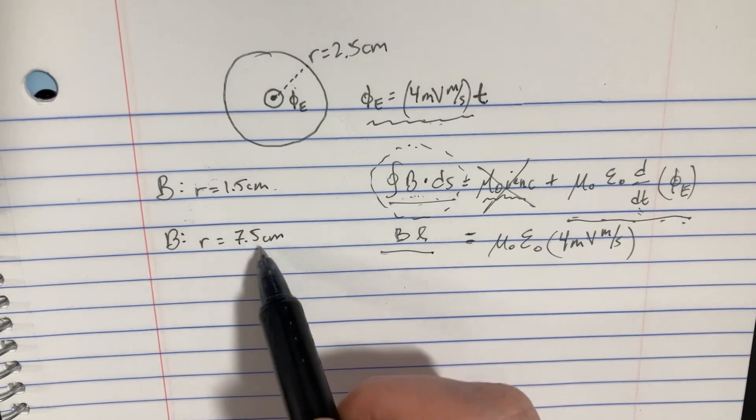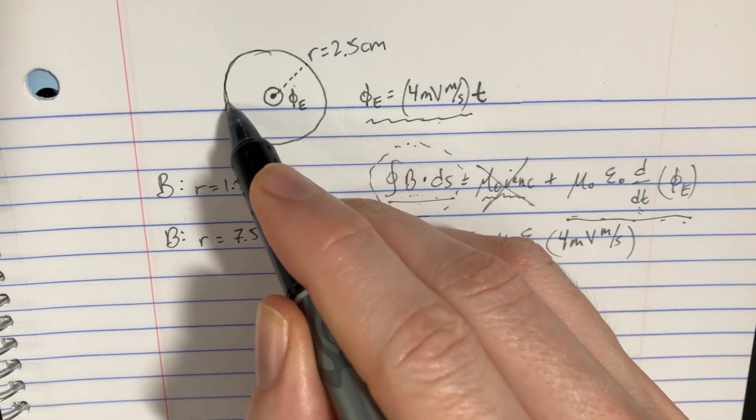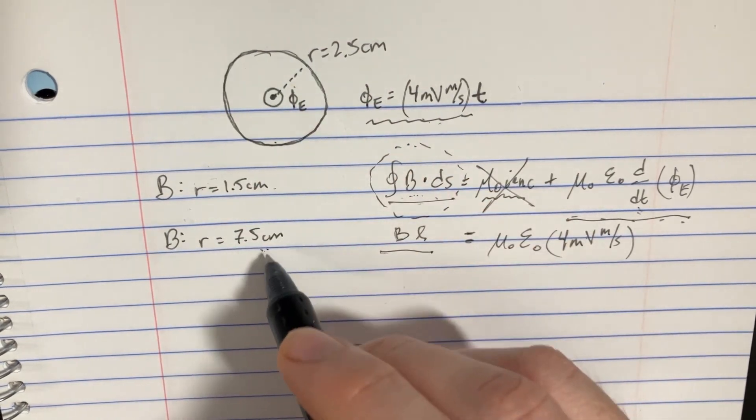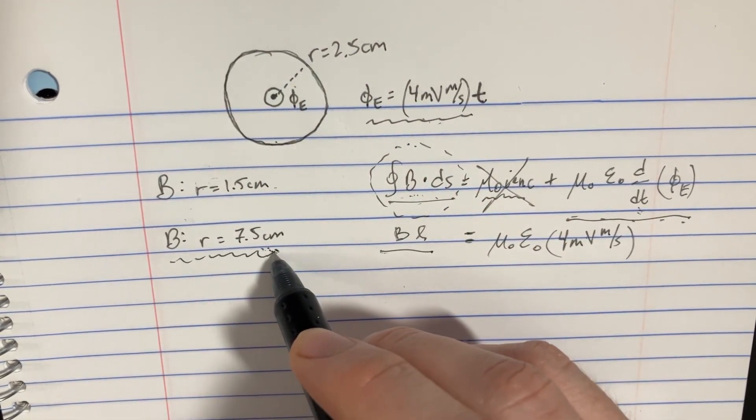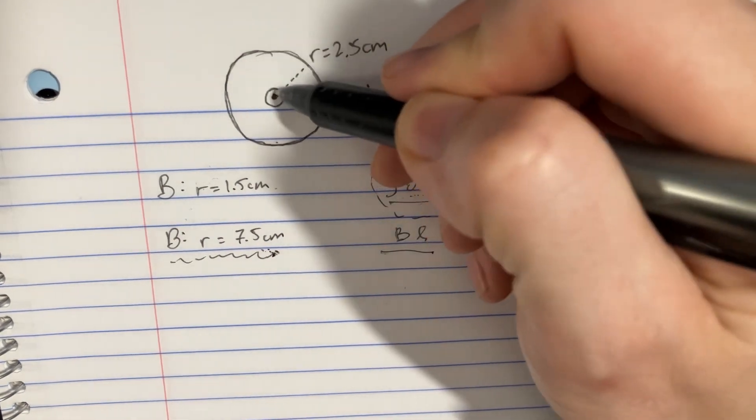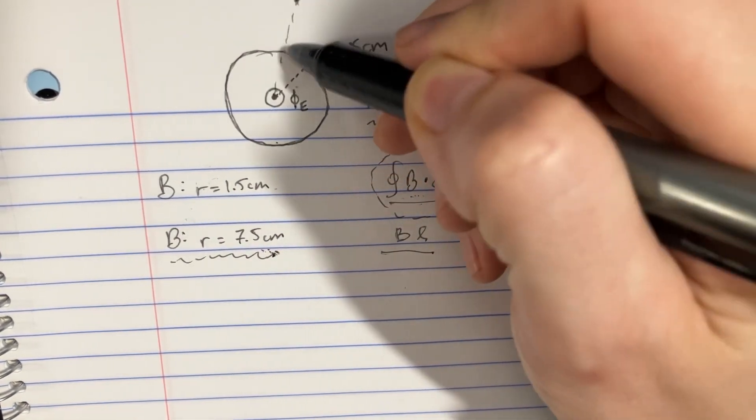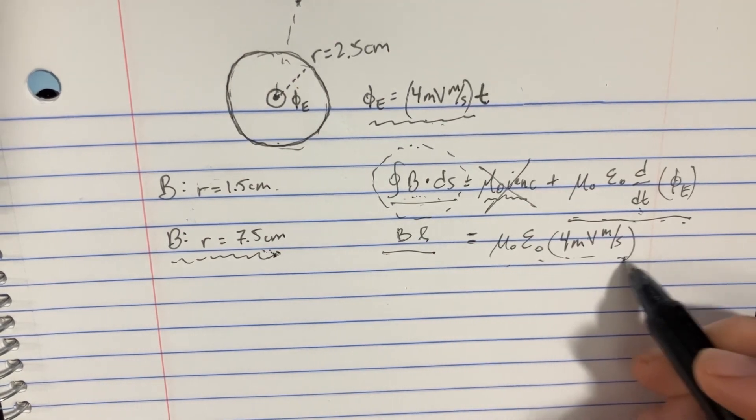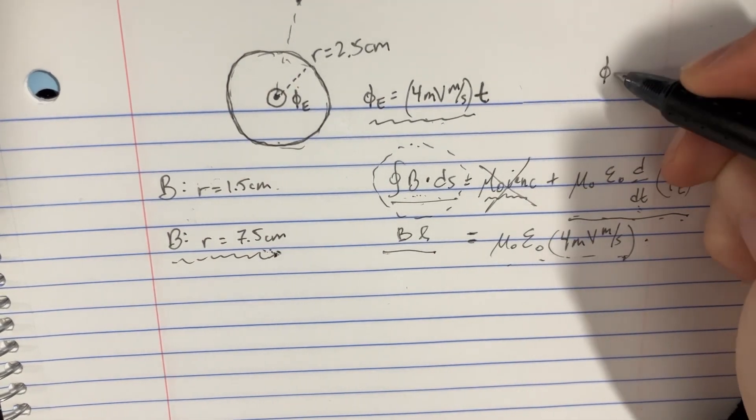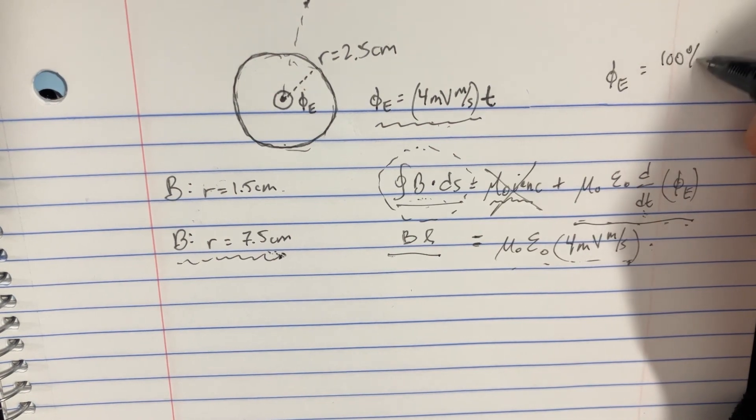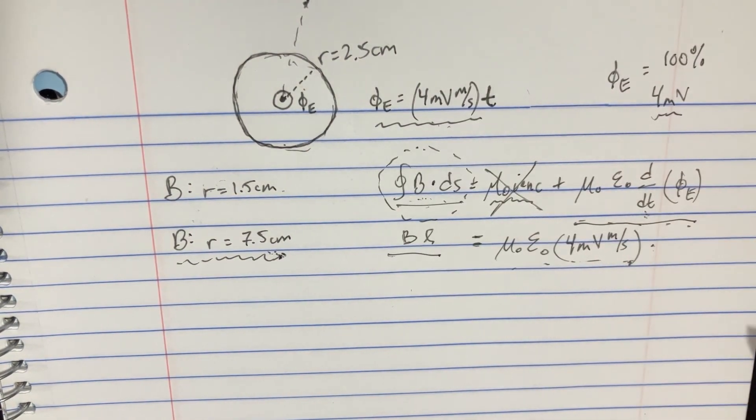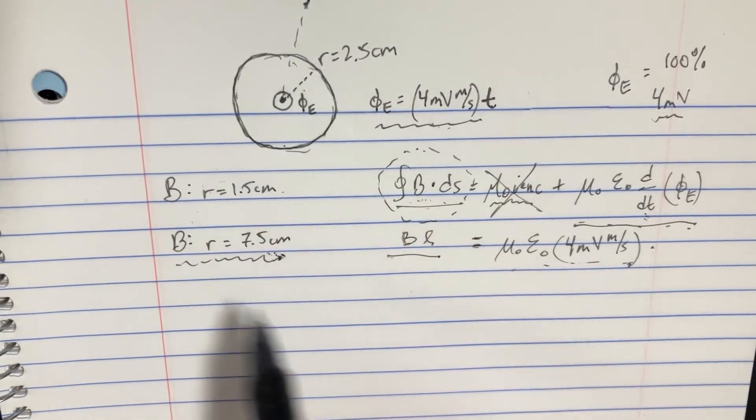This is going to be if we're enclosing the entire circle. And in this particular case, we are. Because the radius is way out here, so we are enclosing the entire thing. So we're going to use 100% of the epsilon naught, because this thing is 100%. If it's 100% of the flux, then it's going to be 4 millivolts. So since we're using the full circle,